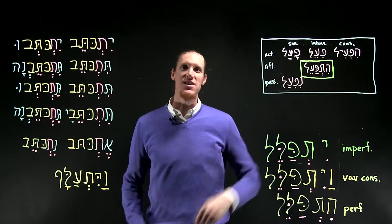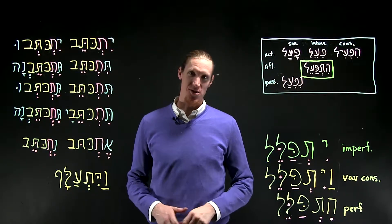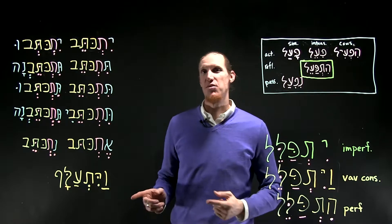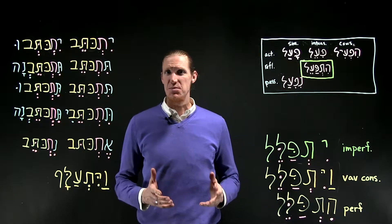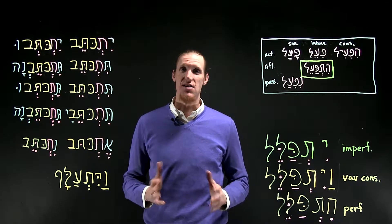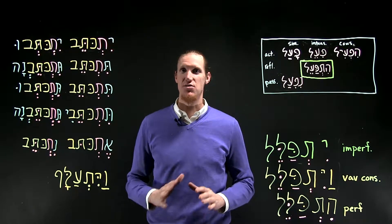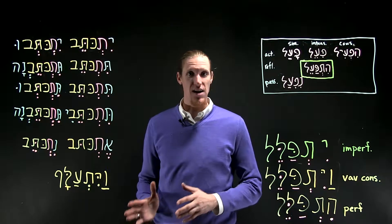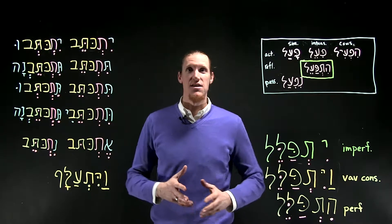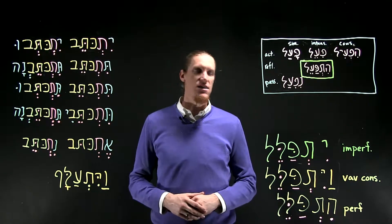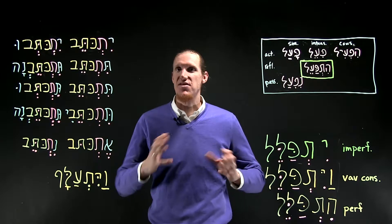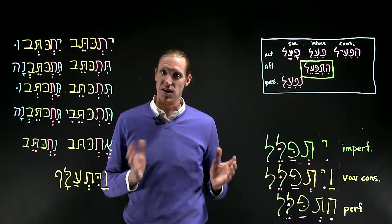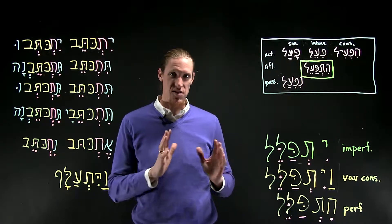Ruchim habaim ledikduk dakot. This video is covering the hitpa'el imperfect. Hitpa'el is, thankfully, the easiest verb stem to recognize. It's very rare, and the rarer the stem, the more unique it is and the less modification it has. So this stem I think you'll find to be fairly straightforward.